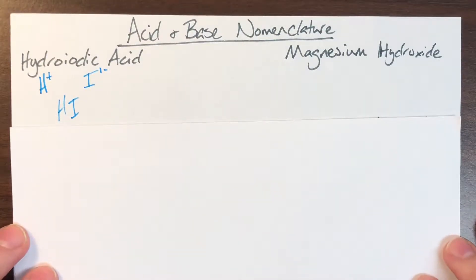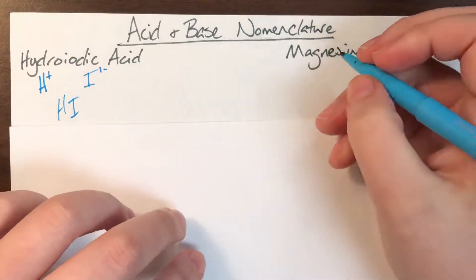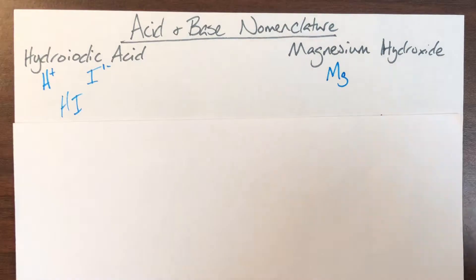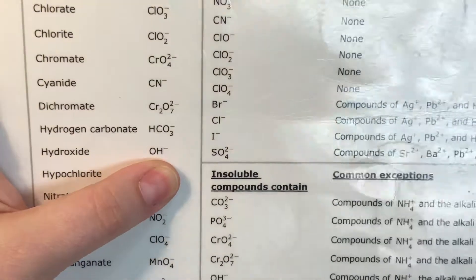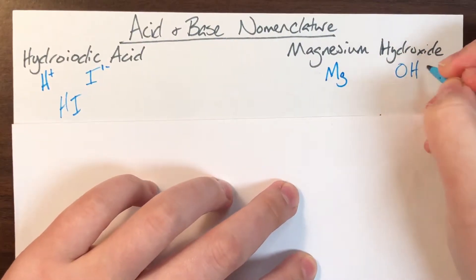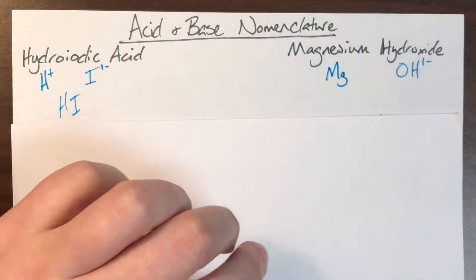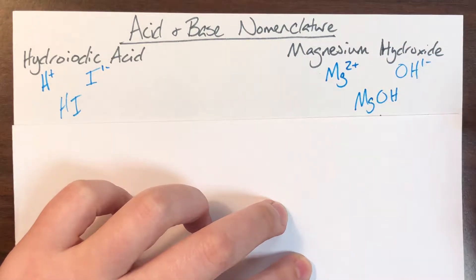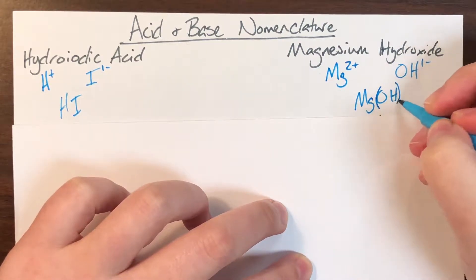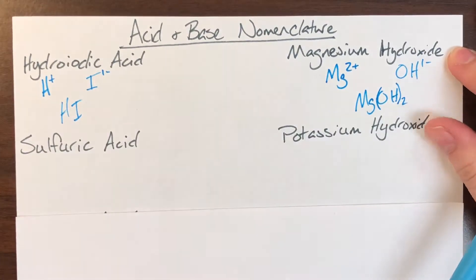Next is magnesium hydroxide. Magnesium is going to be Mg. Hydroxide is a polyatomic ion — it's the thing that makes this a base. But bases follow normal ionic nomenclature rules, so I write hydroxide as OH with a negative one charge. Magnesium is in column two, which means it has two valence electrons and gives them away, so magnesium has a charge of positive two. Exchanging charges for subscripts: magnesium's two becomes hydroxide's two, and hydroxide's one becomes magnesium's one — but I don't write ones. Bases should be familiar and easy to write quickly.